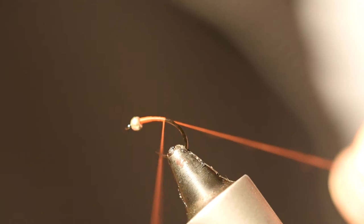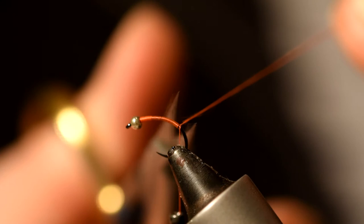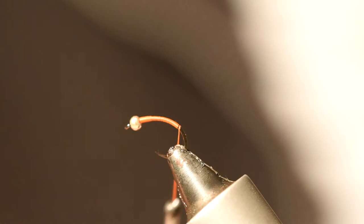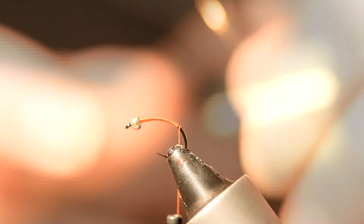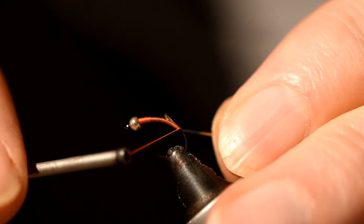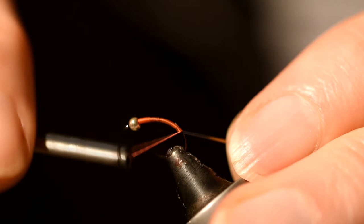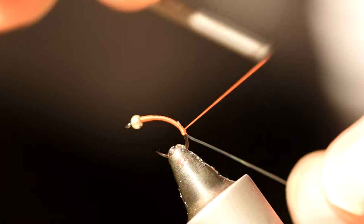Take the thread right down to the bend of the hook. You're going to use size 16 pearl mylar for the rib, so tie that in near the tail. Keep the tag end fairly short - you don't want to build up any bulk in the body.